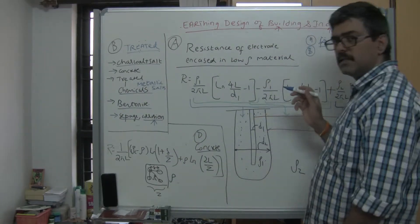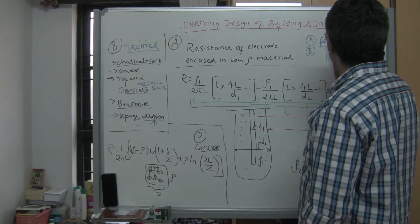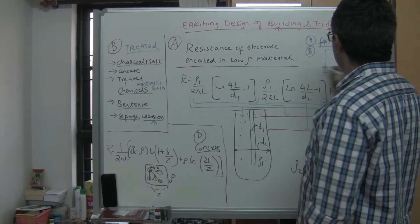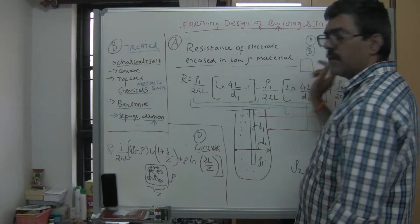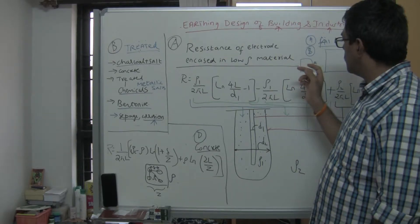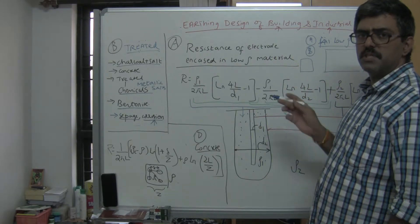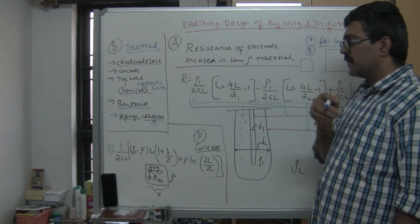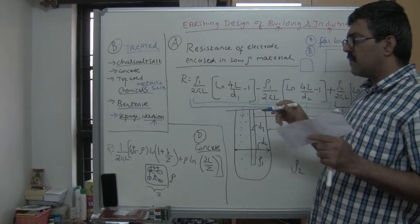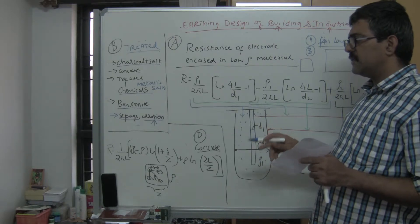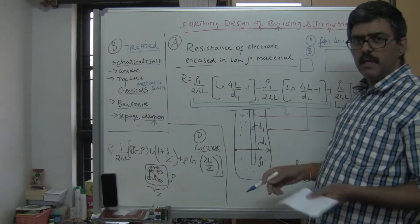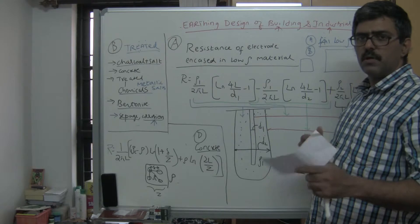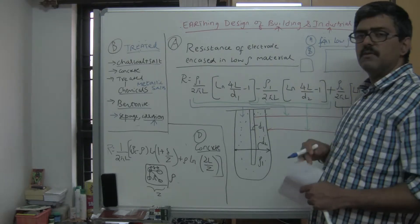You have what is called an auxiliary earth grid. Let's say your plant area or substation is very small. As explained in the previous chapter, the resistance of the earth grid is inversely proportional to the area - more area means smaller resistance.